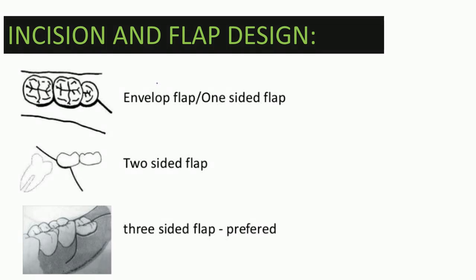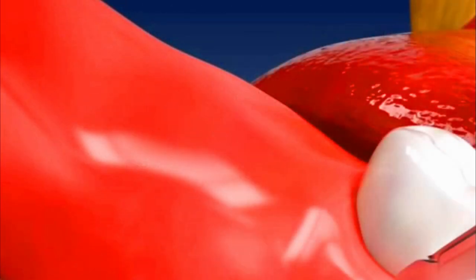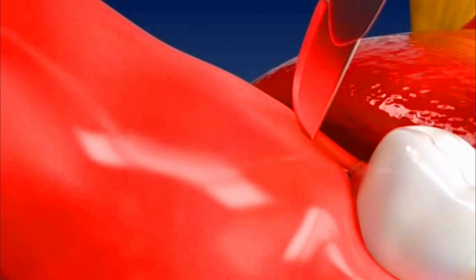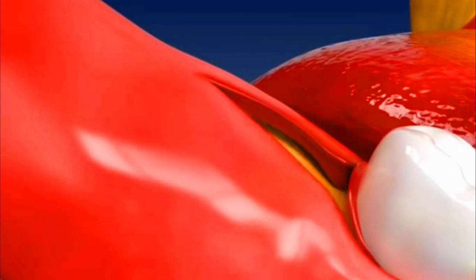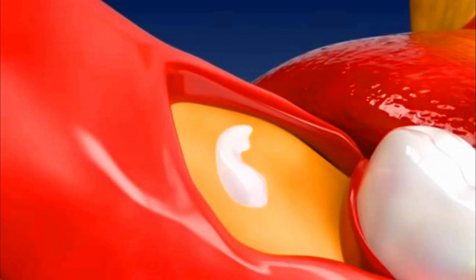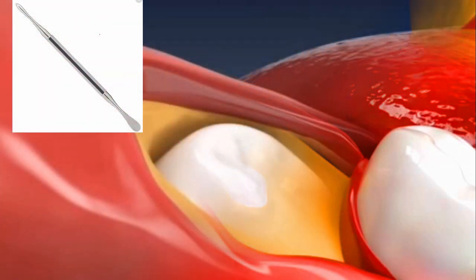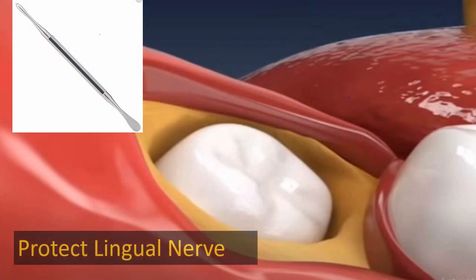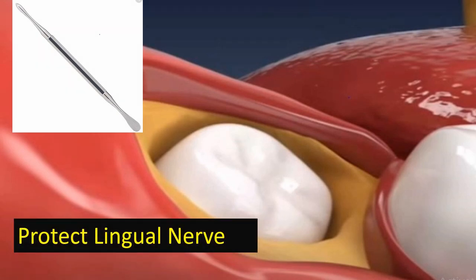For removal of wisdom teeth, the type of incision and flap design is selected — either an envelope flap, one-sided flap, two-sided flap, or three-sided flap, of which the three-sided flap is generally preferred. With a scalpel blade, an incision is made in the gum margin around the second molar tooth, continued behind tangentially, and the gum tissue is retracted to expose the underlying jaw bone.